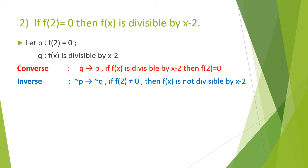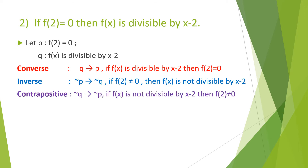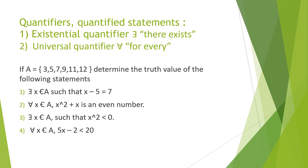The contrapositive is negation Q implies negation P — so if negation Q means f(x) is not divisible by x minus 2, then negation P is f(2) ≠ 0. Now consider quantifiers and quantified statements.